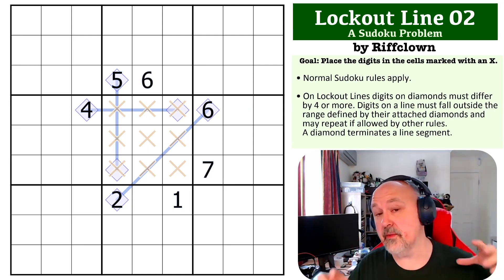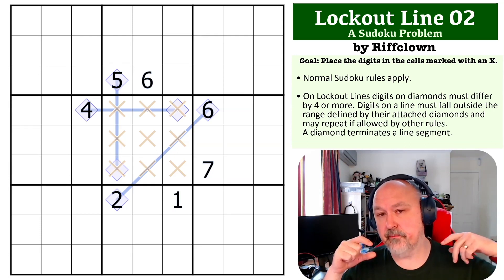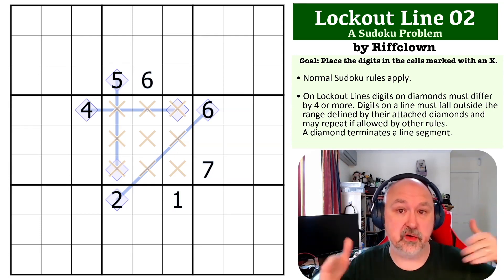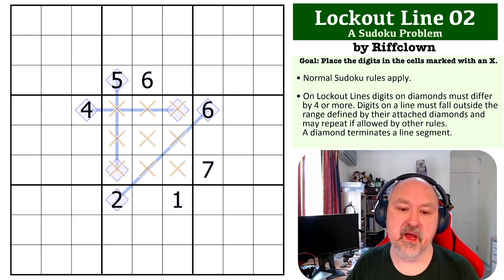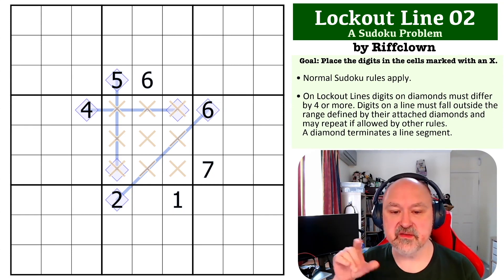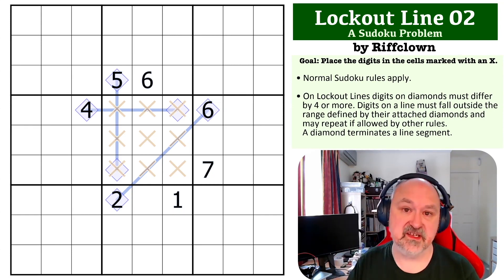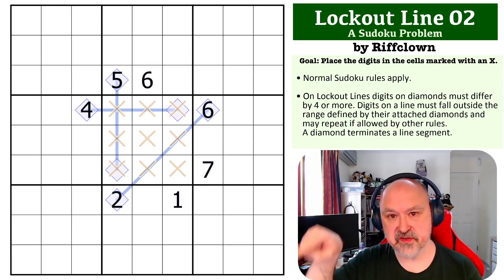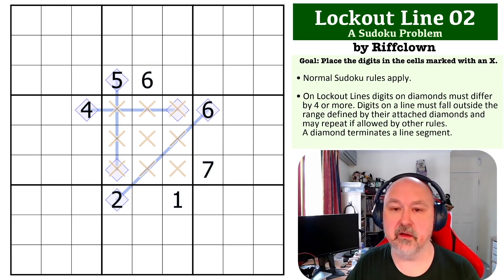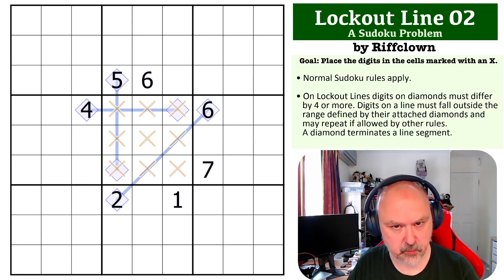If there are multiple diamonds in a line segment, diamonds terminate a line segment, and digits are allowed to repeat on lines if permitted by other rules. Not relevant for this problem, but worth knowing for how lockout lines work in general.